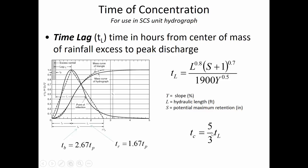If you know the lag time, then all of these other parameters important to characterizing the runoff hydrograph can be calculated directly. For example, the time of concentration is five-thirds of the lag time. You can also find the total length of the triangular portion of the hydrograph. The lag time is really important. Later today, after we work through this example, I'm going to tell you about some physical measurements I've been doing out in the field to try to measure the lag time and compare it to predictions — just to see how well these methods work here in West Virginia, where we've got really high watershed slopes.